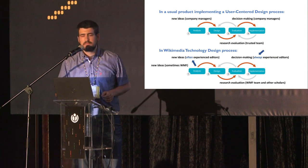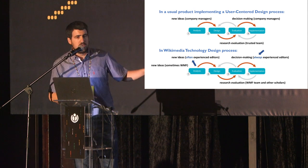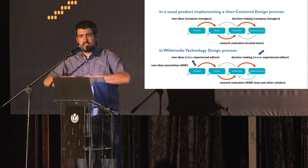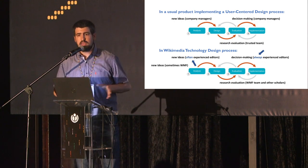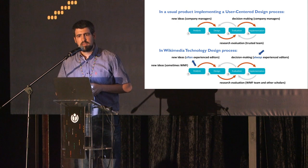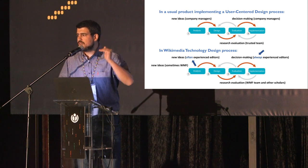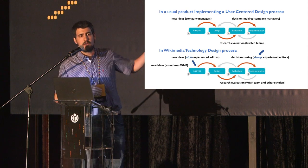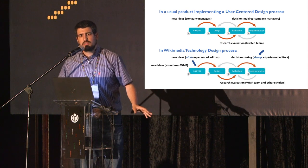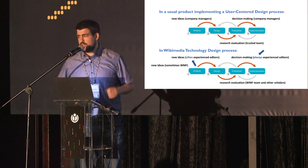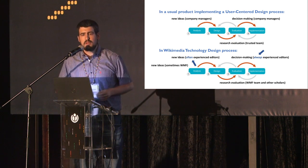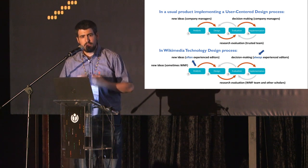What happens in Wikipedia? New ideas come from the foundation, but very often from experienced editors. Research is in the foundation, and the decision-making is always in the communities — always in a group of users inside the communities. It's a different process; the actors are different. Within a company, the one who sets the strategy is the one who finally decides what to do with research in order to implement changes. In Wikipedia, the ones who set strategy are the communities and the foundation, but the ones always deciding what to implement are the communities.